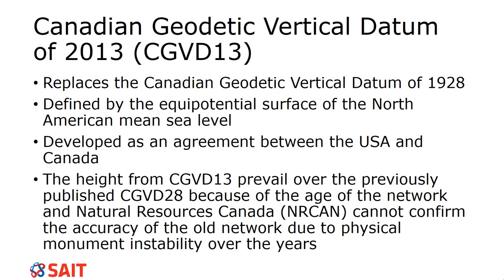We also have the Canadian Geodetic Vertical Datum of 2013, or CGVD 2013. This is a more recent update, specific to Canada, and it replaces one that was significantly older — about 85 years older — the Canadian Geodetic Vertical Datum of 1928. These large datums require a lot of fieldwork and collaboration between different government organizations, making it a very expensive process. This datum was defined by the equipotential surface of North American mean sea level, not specific to Quebec, and was an agreement between the US and Canada.